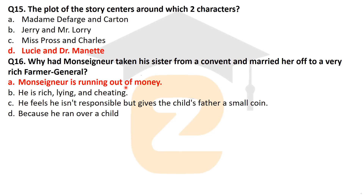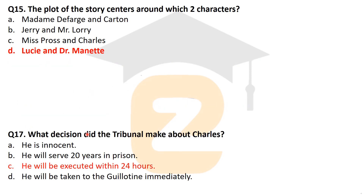The last question: what decision does the tribunal make about Charles? He will be executed within 24 hours. That was the decision taken by the tribunal related to Charles Darnay. So friends, these were the important MCQs related to the novel A Tale of Two Cities by Charles Dickens. Please note down all these questions and stay connected with Englandzone for more important videos of English literature. Please subscribe, like, and share. Thank you very much for watching.